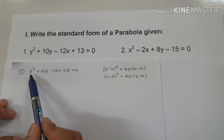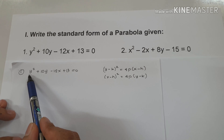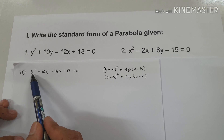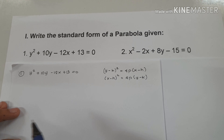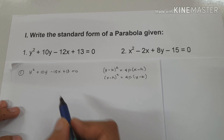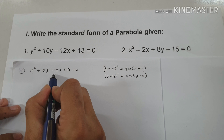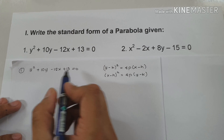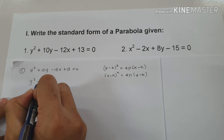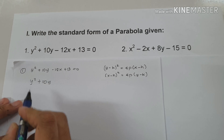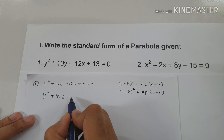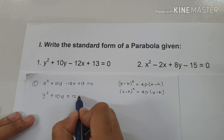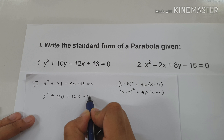For example, number one: y squared plus 10y minus 12x plus 13 equals zero. By mere inspection, we can say that our parabola opens to the right or to the left because of the y squared term. So the first thing we're going to do is move negative 12x plus 13 to the side of zero. Therefore, we have y squared plus 10y equals 12x minus 13.